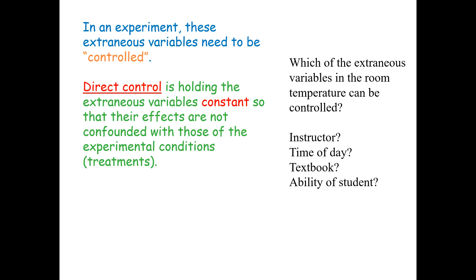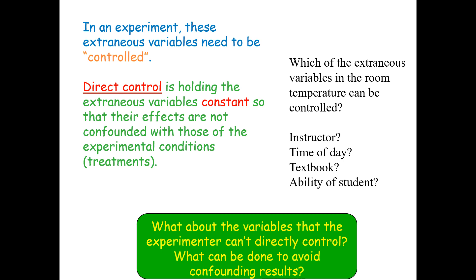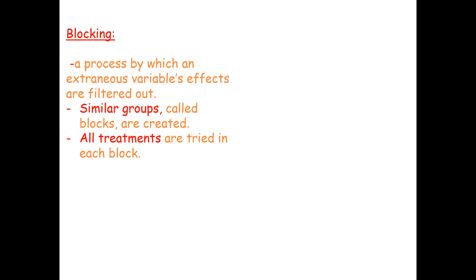Which extraneous variables in the room temperature experiment can be controlled — such as instructor, time of day, textbook, or student ability? Is it feasible to control each of these? What about variables the experimenter can't directly control? One way to address this is blocking. Blocking is a process by which an extraneous variable's effects are filtered out. You create similar groups called blocks, and all treatments are tried in each block.